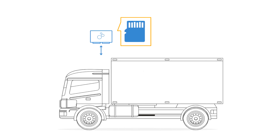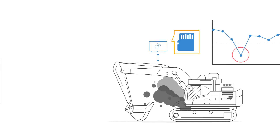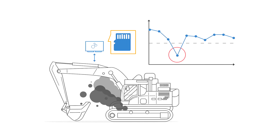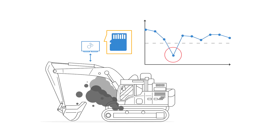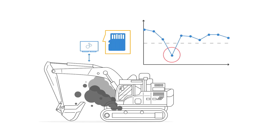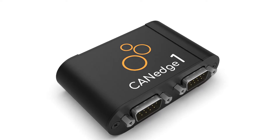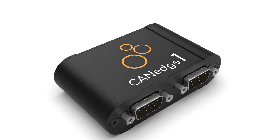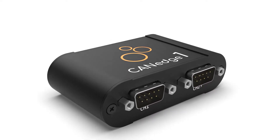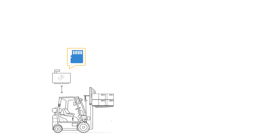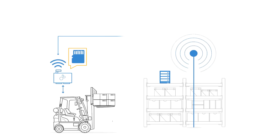If you simply need to log J1939 data for black-box purposes or rare-issue diagnostics, recording the data to an SD card will typically suffice. For such a purpose, a CAN-Edge 1 is an ideal solution. However, in recent years, vehicle telematics has become increasingly popular.